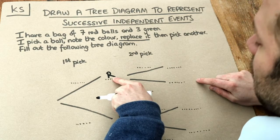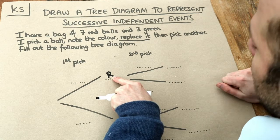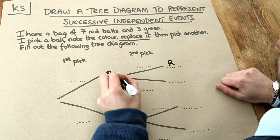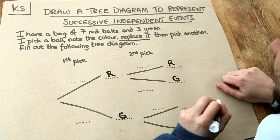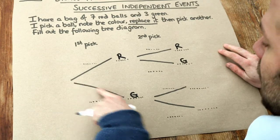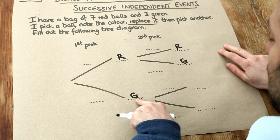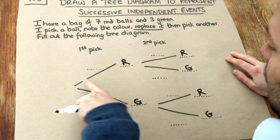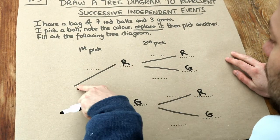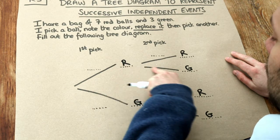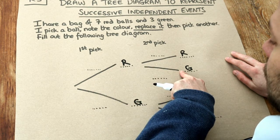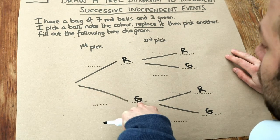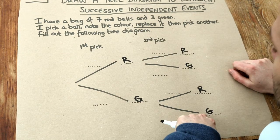If we're at this point, that means we've picked a red ball, but then on our second pick from here we can pick a red ball again or we could pick a green ball. Similarly, if our first pick was a green ball, from there we could still pick either a red ball or green ball. So following this path down the tree would be picking a red ball followed by a green ball, and following this other path would be picking a green ball for the first pick followed by a green ball again.